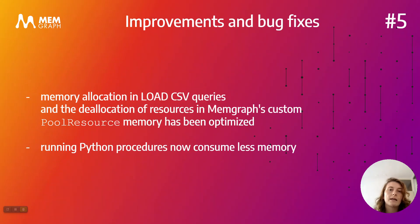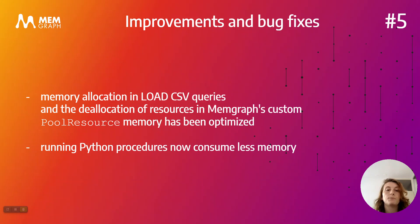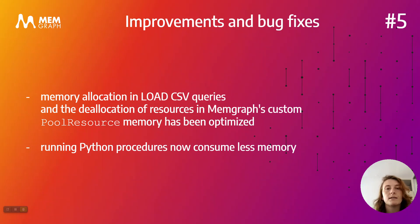With several improvements and bug fixes on the allocation and de-allocation of memory, we managed to speed up load CSV queries even more, and running Python procedures now consume less memory. In one sentence, everything is just faster and uses less resources.